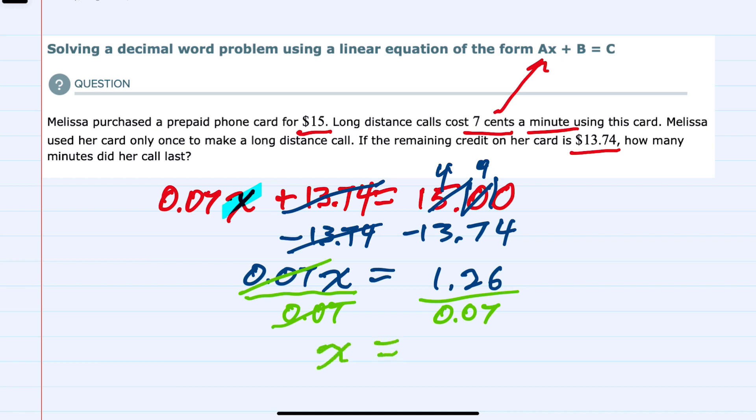And on the right, doing the division we have 18. In this case, x is our minutes. So how many minutes did Melissa's call last? 18 minutes.